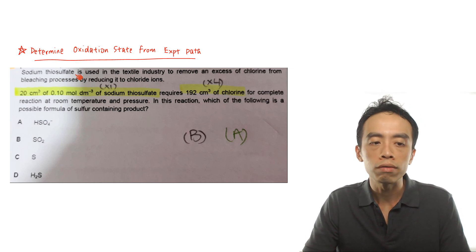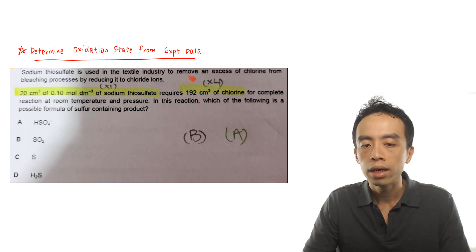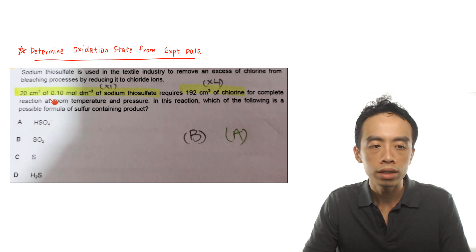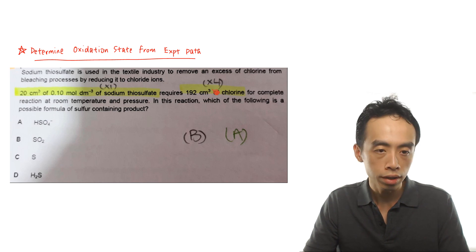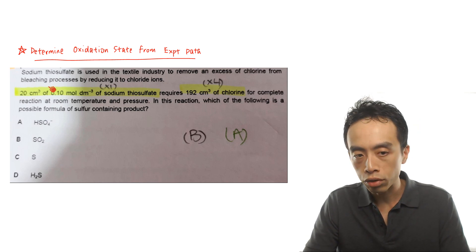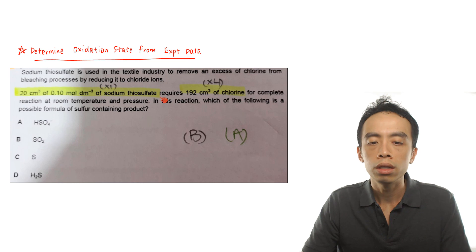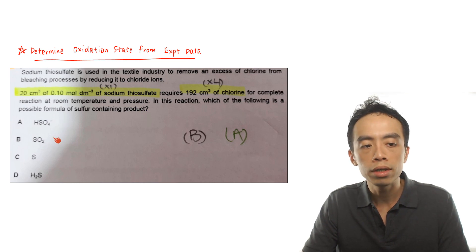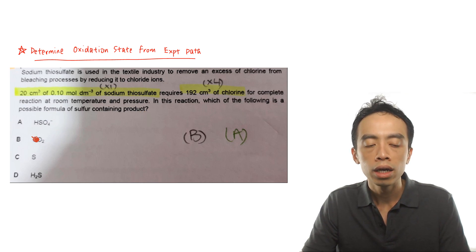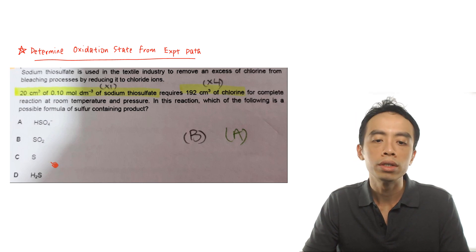We have 20 cm³ of 0.10 mol per dm³ of sodium thiosulfate, which requires 192 cm³ of chlorine for complete reaction at room temperature and pressure. The question asks: which of the following is a possible formula of the sulfur-containing product? Option A is HSO₄⁻, B is SO₂, C is sulfur element, and D is hydrogen sulfide H₂S.